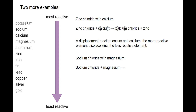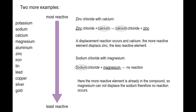Next example: we're going to react sodium chloride with magnesium. We compare the reactivity of sodium and magnesium, underlining the least reactive and circling the most reactive. Sodium is higher towards the top of the list than magnesium, so we circle sodium and underline magnesium. In this case, no reaction will occur because the most reactive metal is already in the compound. Magnesium isn't reactive enough to displace sodium, so no reaction occurs.